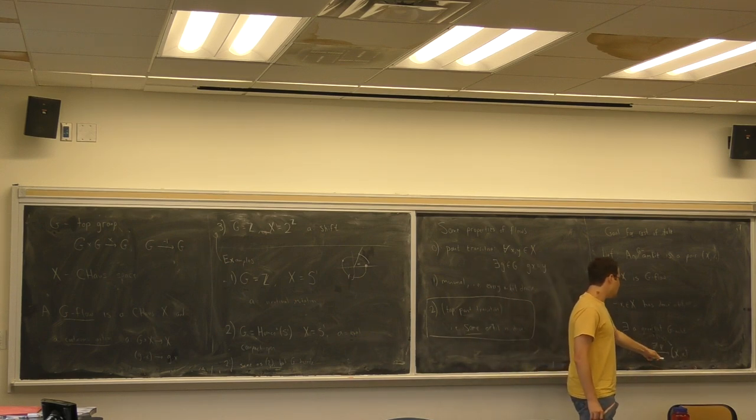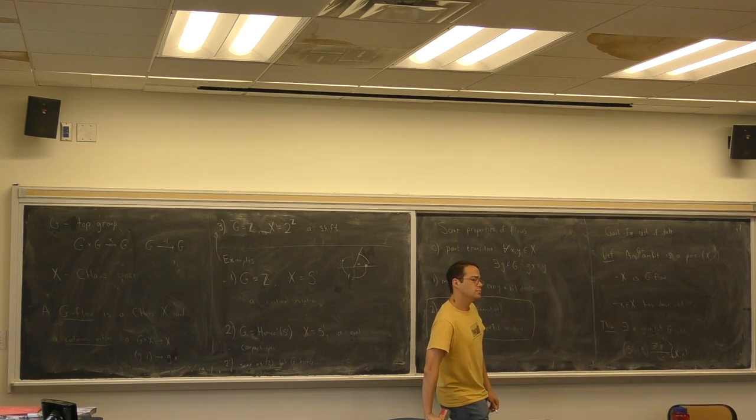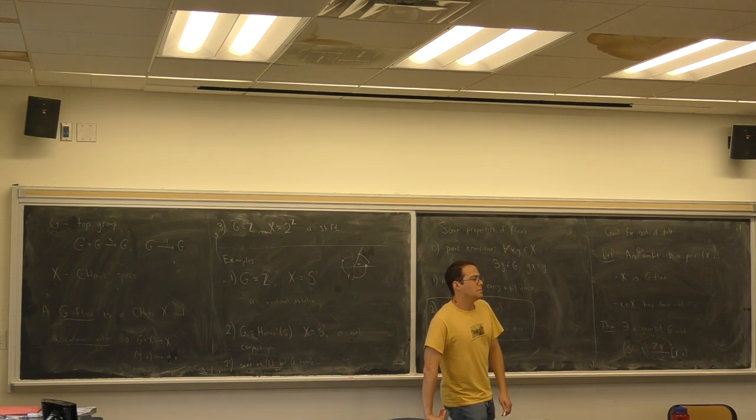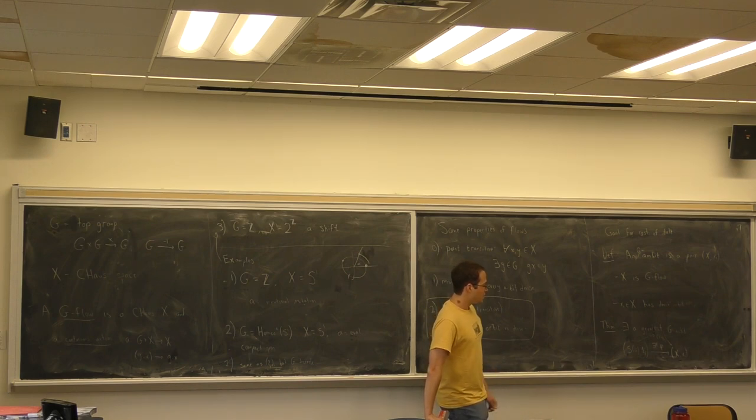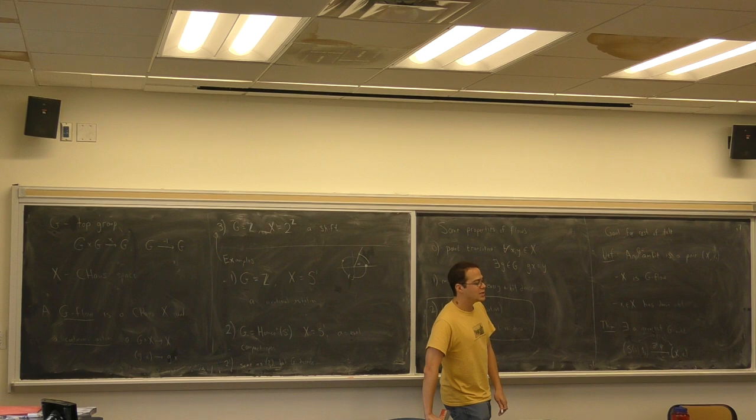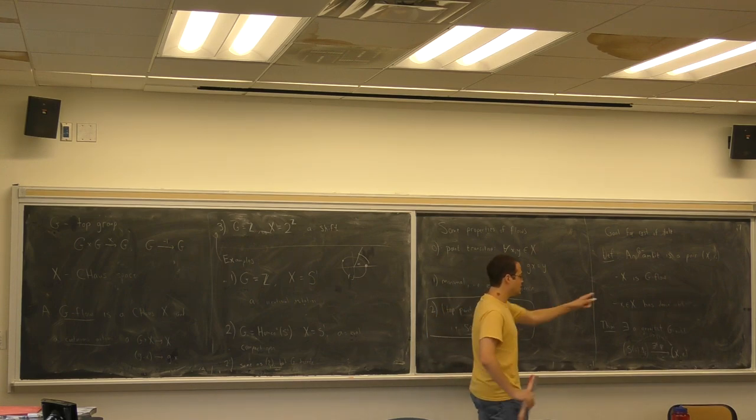And in what sense is a minimal flow minimal? Oh, that's just in a Zorn's Lemma sense. It contains no proper subflows. Oh, okay. Cool. And here's another, annoying one. So the universal minimal one. It is unique up to a G-flow isomorphism, but not unique up to a unique G-flow isomorphism. That is an annoying wrinkle if you care about these things. And this is a good stopping point.